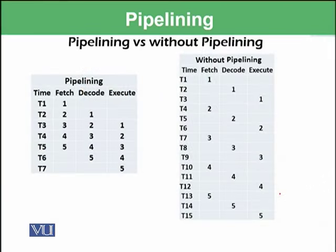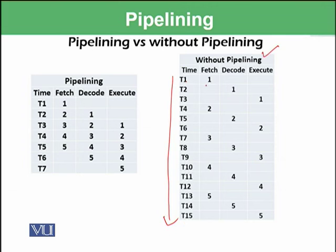Here is an example. We have time slots from T1 to T15, and we want to execute five instructions. Without pipelining, the procedure would be: at time T1, the first instruction is fetched; at time T2, the first instruction is decoded; at time T3, the first instruction is executed. So we need three time slots — perhaps in nanoseconds — to complete the execution of just the first instruction.